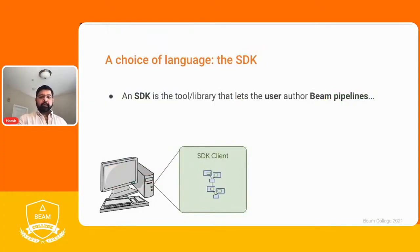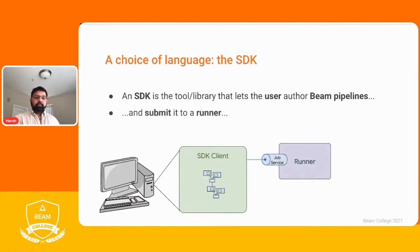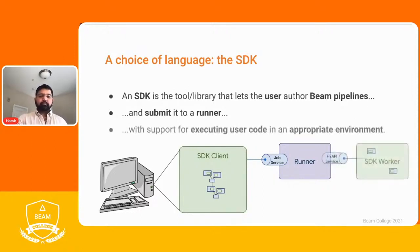Let me go a little deeper into what an SDK is and how it interacts with runners. The SDK is a tool and library to let users author Beam pipelines. Once they create a pipeline, the SDK extracts a representation of that pipeline in a graph format and submits it to the runner of your choice using a job service, which is an abstract implementation of the runner. The SDK supports execution of user code in the appropriate environment. The runner is responsible for taking this SDK code and managing it in a distributed environment, and then calls back into the SDK to execute the user-defined functions it doesn't know how to execute.